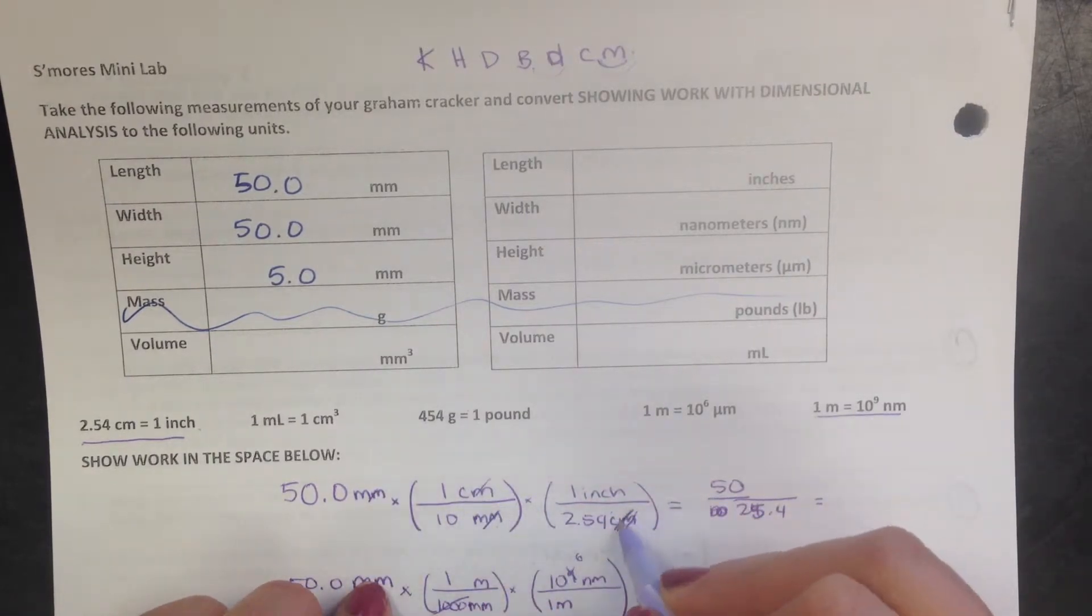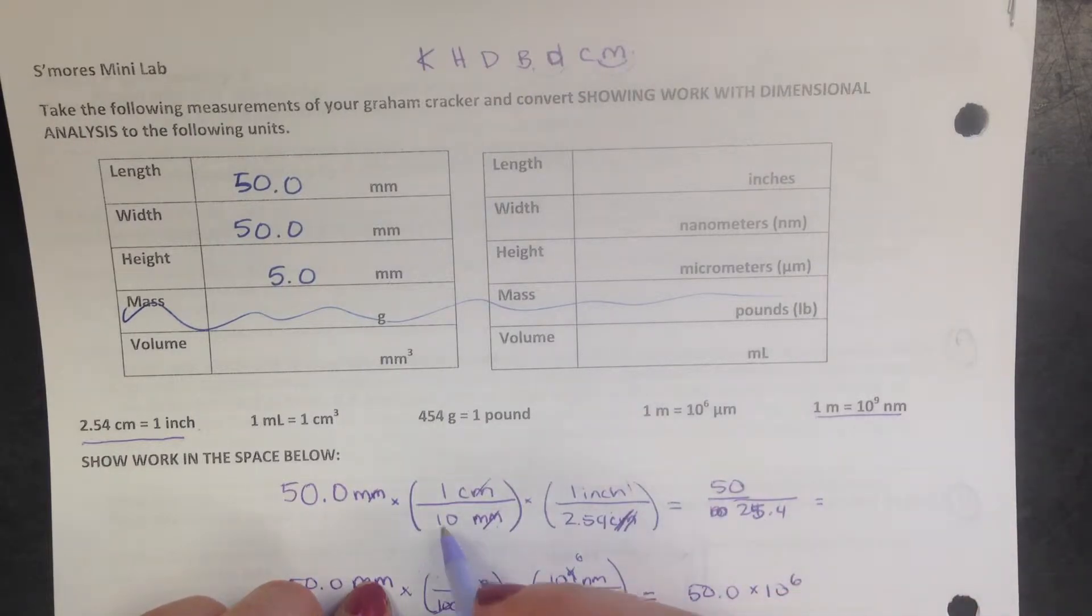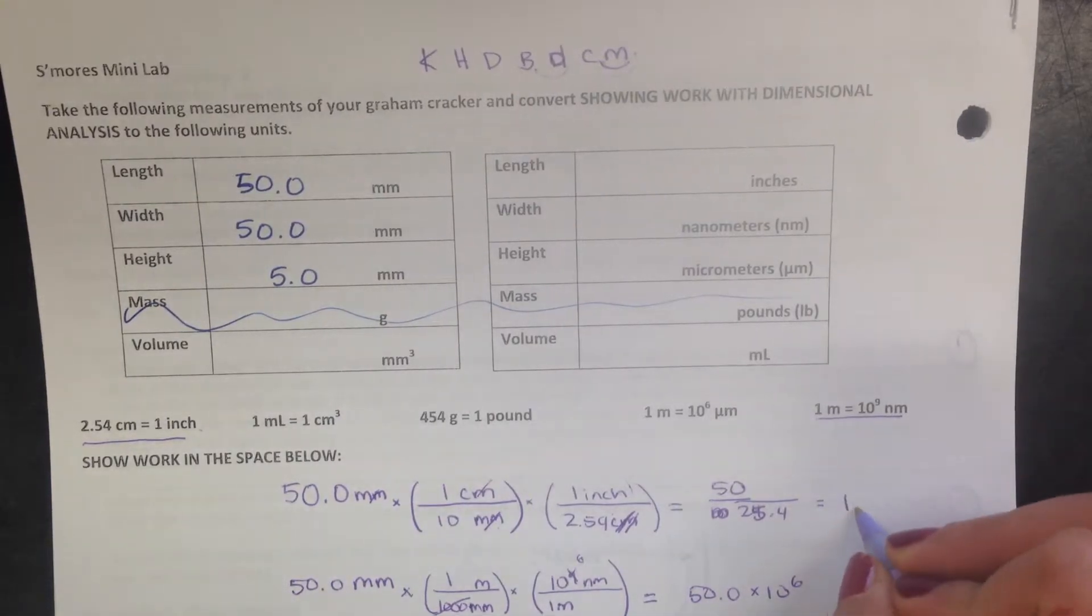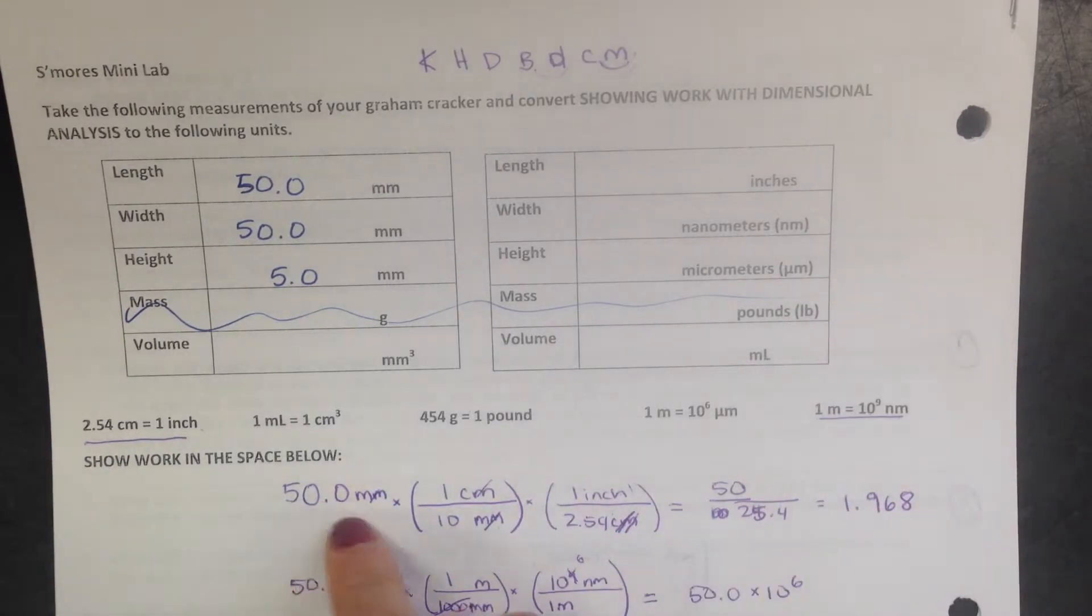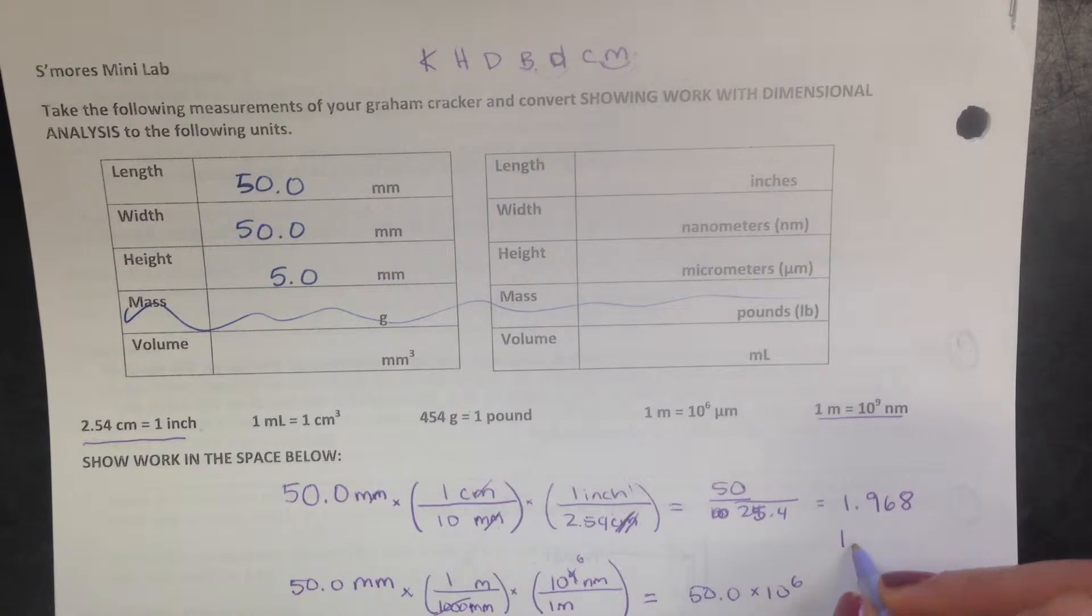We multiply the top and divide by the bottom, and when you do that, the units cancel except for the inches. So what you would get is 50 times across the top, and times across the bottom. Now I'm going to divide 50 divided by 25.4, which is 1.968. We had three sig figs here, so we're going to keep three sig figs there. 1.97, and it's inches.